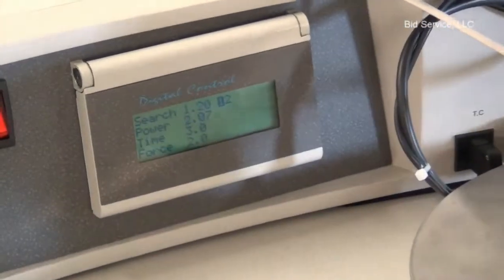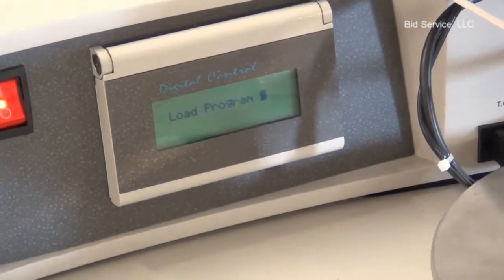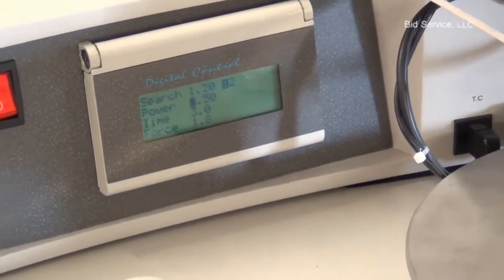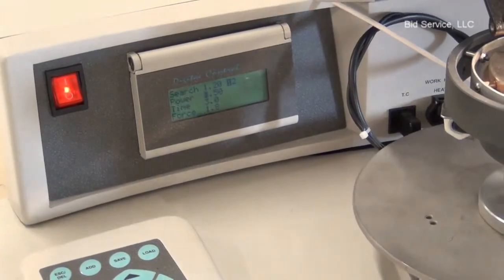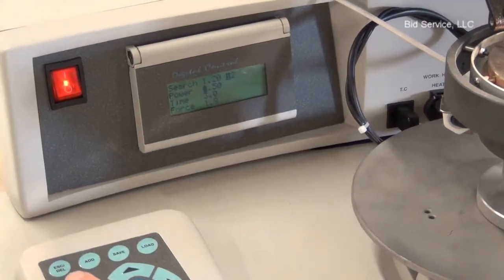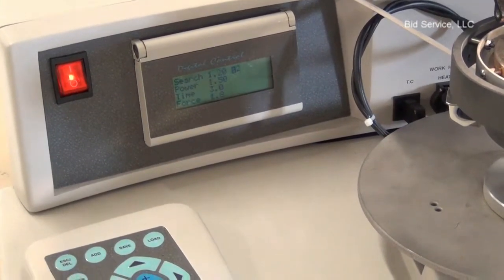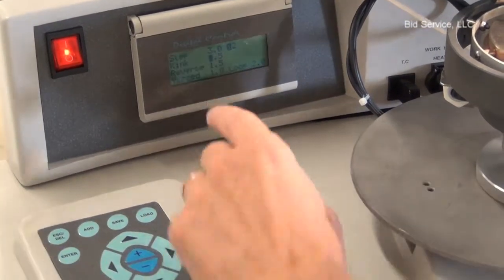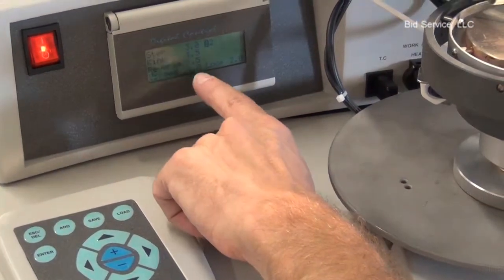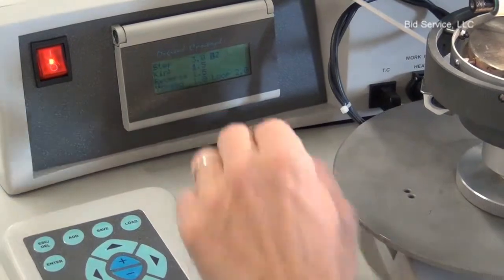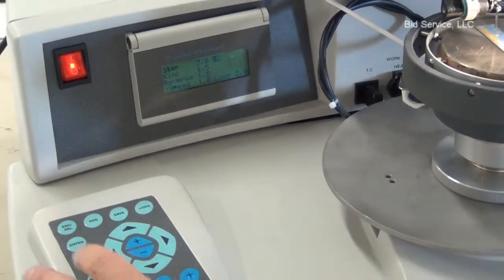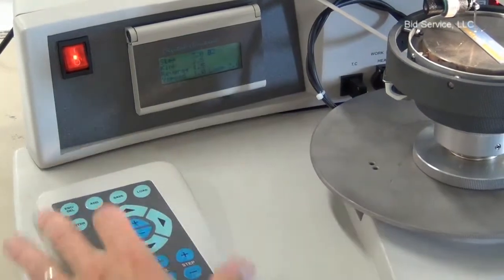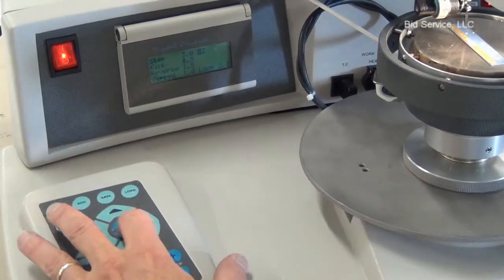Here's a program I have loaded in here. I can load in program one, for instance. And then we have our search height, power, time, force for bond one. Step down to the second page. We have a step height and a kink in reverse. Wire speed. That's your wire drive motor. Loop height. This is all explained in the manual.